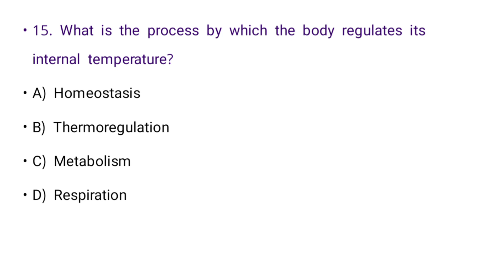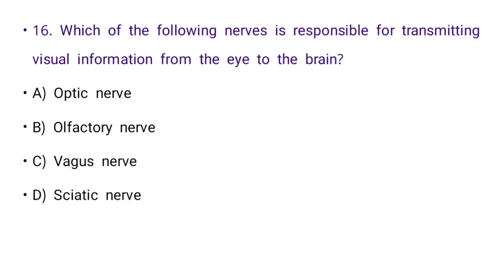Next: Which of the following nerves is responsible for transmitting visual information from the eye to the brain? Options: optic nerve, olfactory nerve, vagus nerve, or sciatic nerve. The right answer is A: optic nerve.